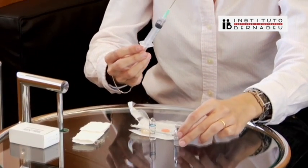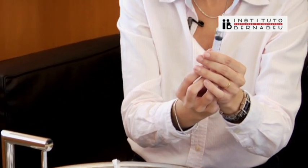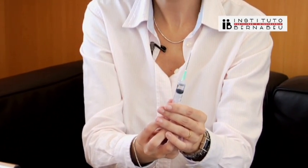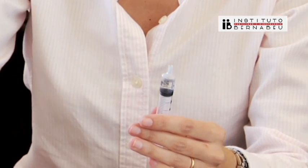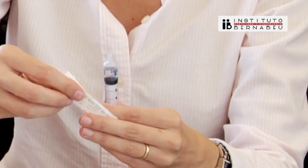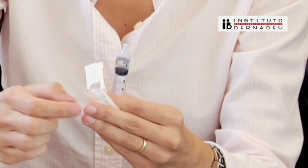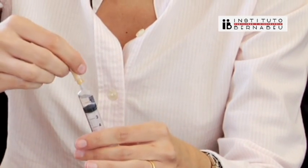Now you need to change needles, leaving a small air bubble in the top part of the syringe. Take off the intramuscular needle and attach the subcutaneous needle to the syringe, which is what will be used for the injection.